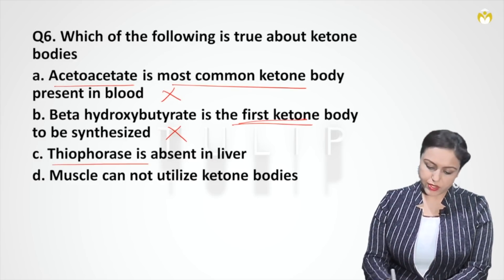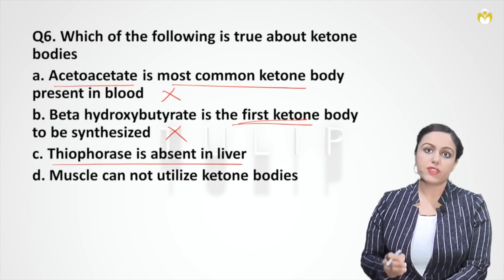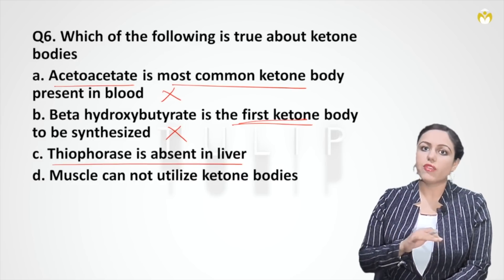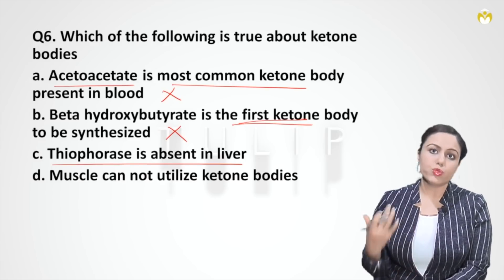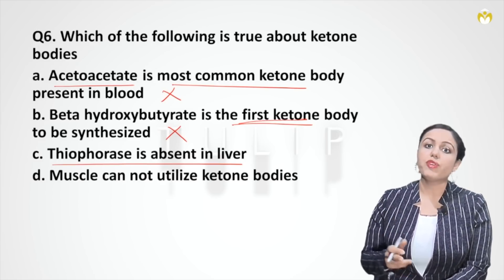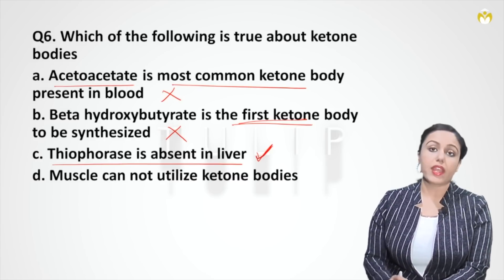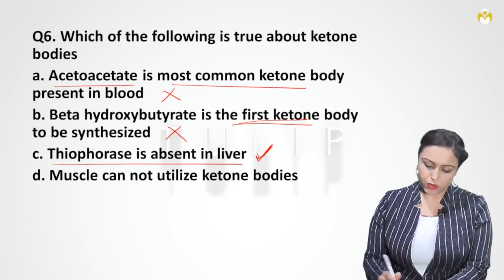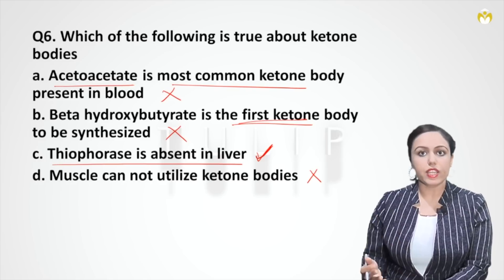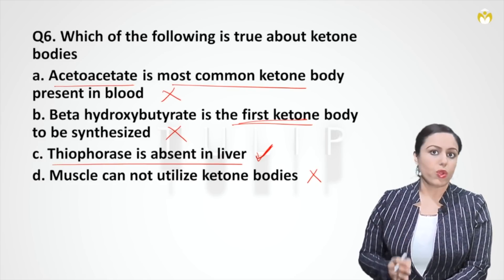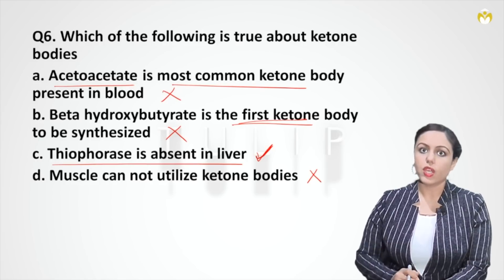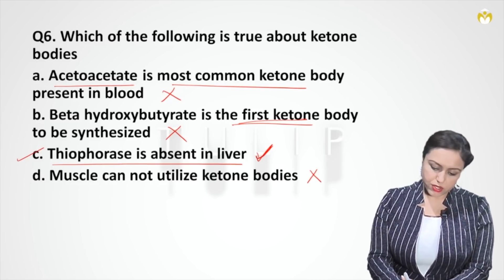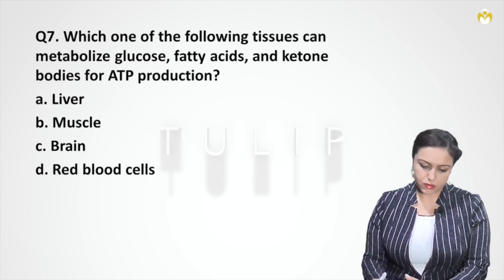Option C: thiophorase is absent in liver — thiophorase is the first enzyme of ketone body utilization. This enzyme is absent in liver so that the liver can never use ketone bodies; liver has to produce ketone bodies for heart and brain. Option D says muscles cannot use ketone bodies — this is wrong. Muscles can use ketone bodies; this was a controversy earlier but is now clear in standard books. So the answer is C.